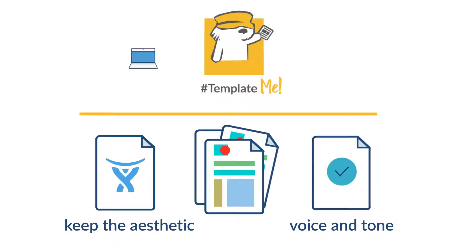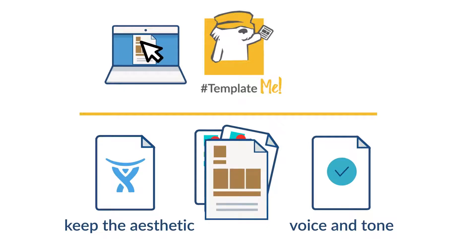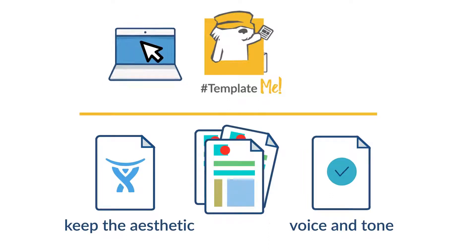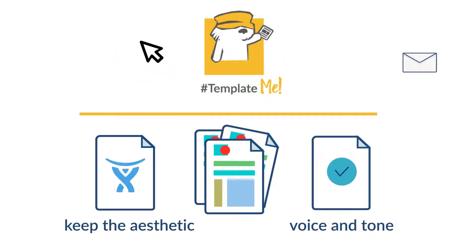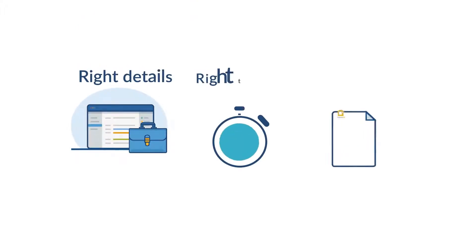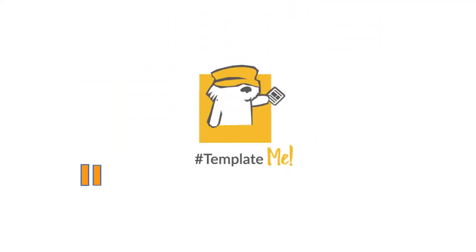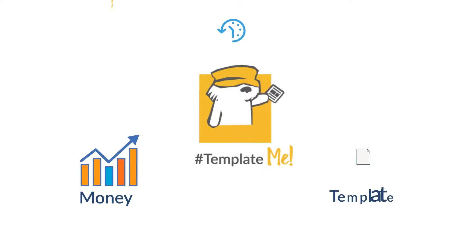With Template Me, you can let customers know their business is valued and maintain the aesthetic of your organization. Customize the messages sent as your project's notifications to really add your company's voice and tone to your communications. Communicate just the right details at the right time with customized messages and notifications for each event. Save more time and money by saving your per-event message templates for reuse.